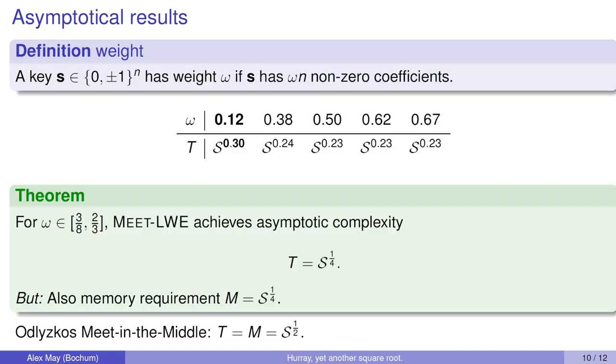Let's start with the asymptotics first. For real cryptosystems, like the NTRU cryptosystems, usually we choose secrets of a smaller weight. Let me first define what a weight is. S has weight omega if s has omega times n non-zero coefficients. For random s, you would expect weight 2/3. But usually you choose a smaller weight, having a smaller number of plus minus ones in your secret. Here in the table you see some weights. We start with extremely small weight like 0.12, and then we have weights in range 0.38 up to full weight 0.69. We can compute the running time T for these weights. For the very small weight, we obtain search space to the 0.3. But for the last larger weights, we have roughly search space to the 1/4.